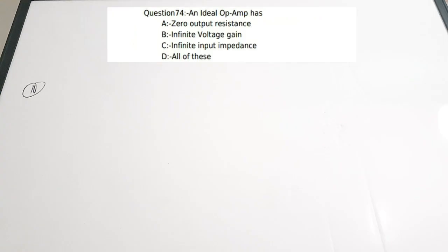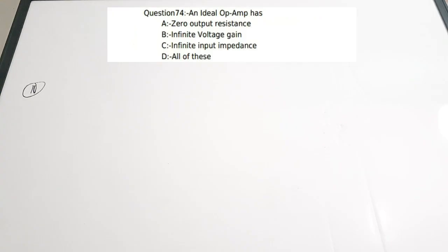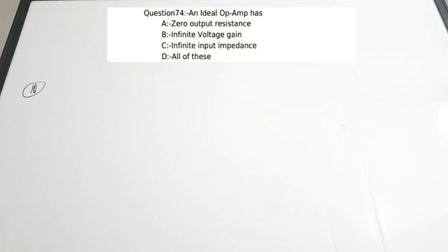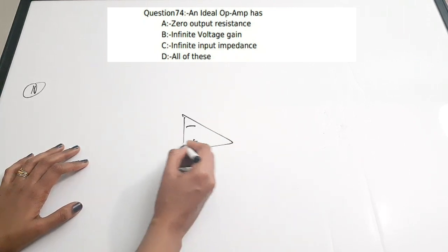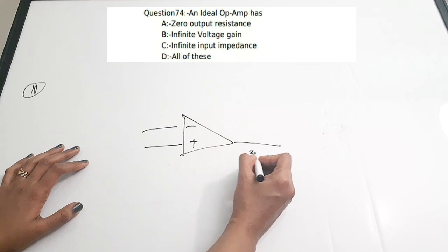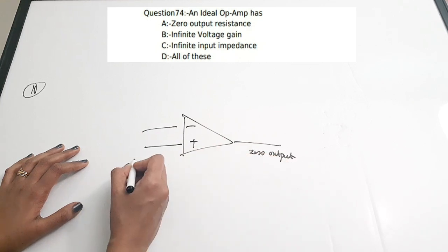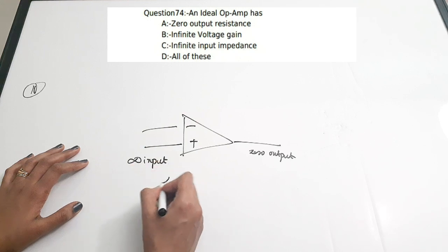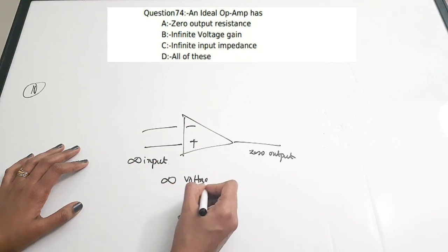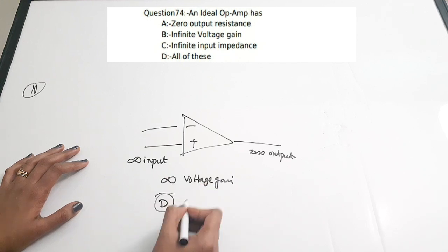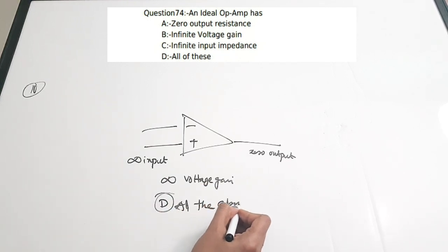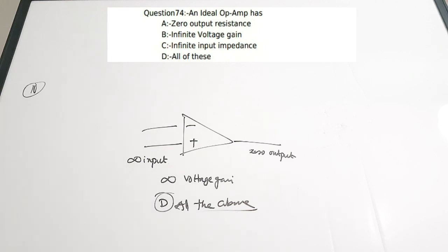Eleventh question: An ideal op-amp has — a) zero output resistance, b) infinite voltage gain, c) infinite input impedance, d) all of the above. For an ideal op-amp: it has zero output resistance, infinite input resistance, and infinite voltage gain — all of these are correct. So the correct answer is option D, all of the above.